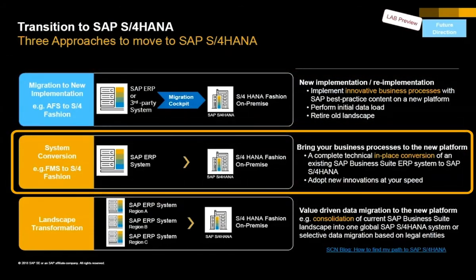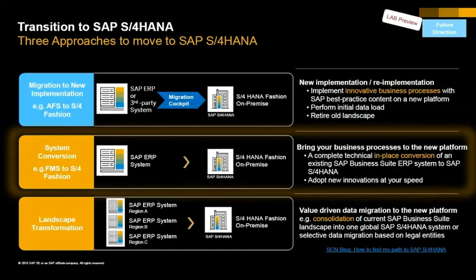The second opportunity is if you're running FMS, to get to S4 Fashion. This is an in-situ conversion, again using standard tools. The nice thing is that if you're on FMS, you're already on HANA, you're already running the vertical business, and essentially what we're doing now is using standard tools to do an in-place conversion of the FMS ERP into the S4 Fashion ERP with the simplified data structures. So when you're ready, you can actually do that and get to those new capabilities in S4.